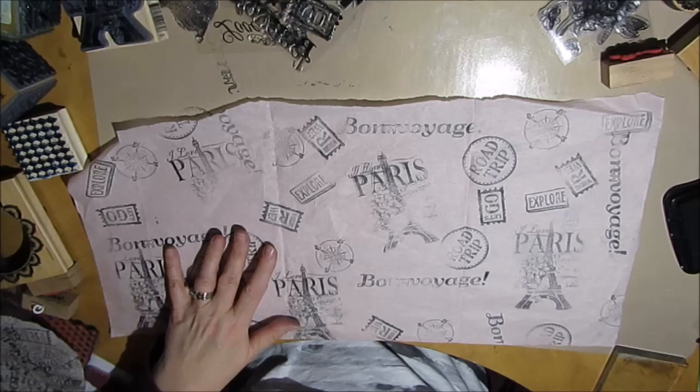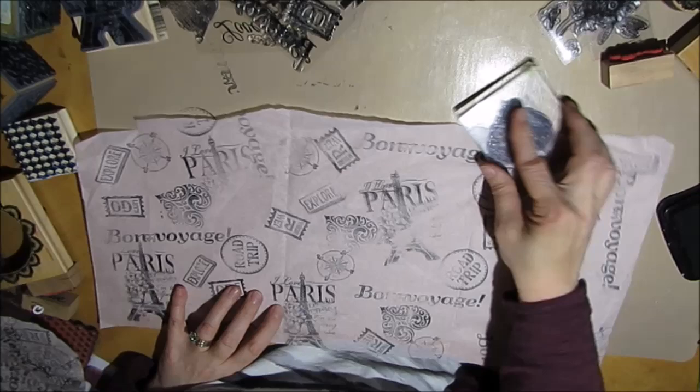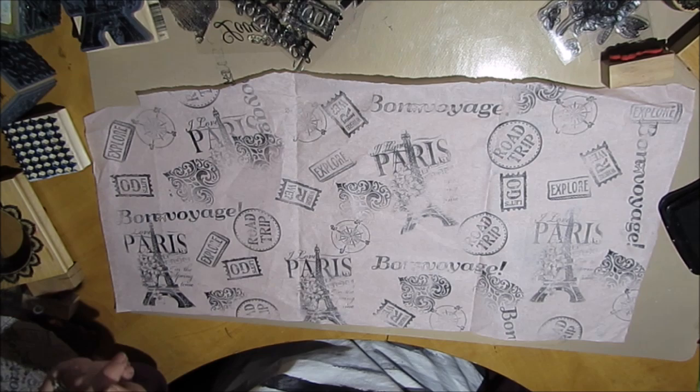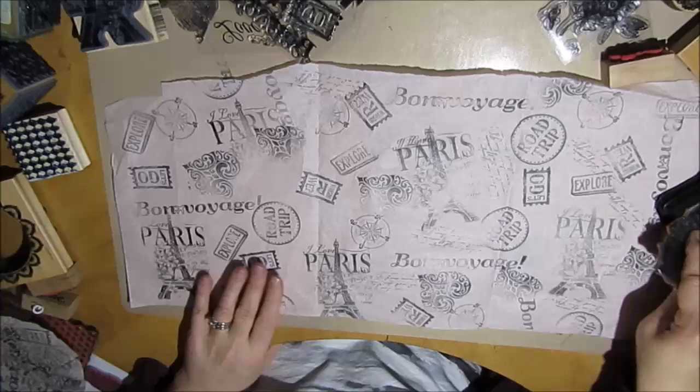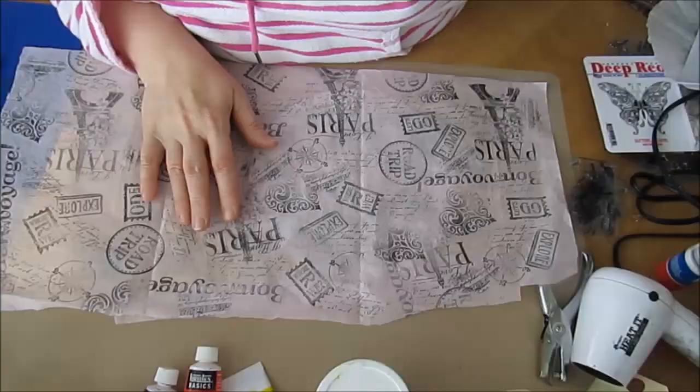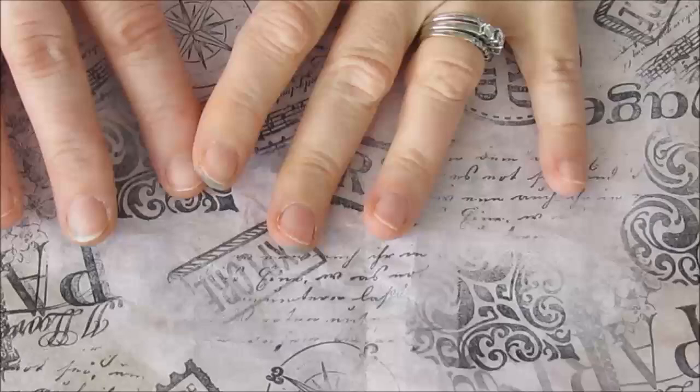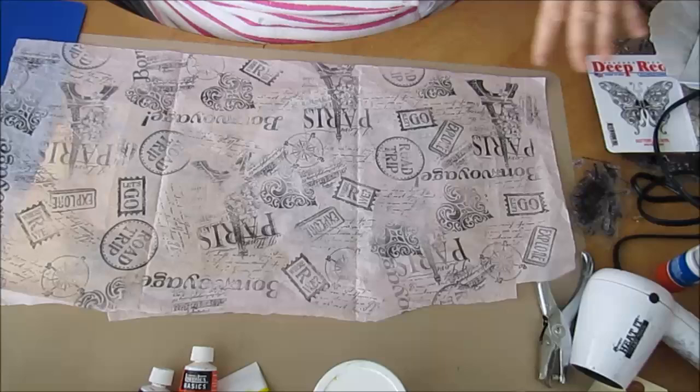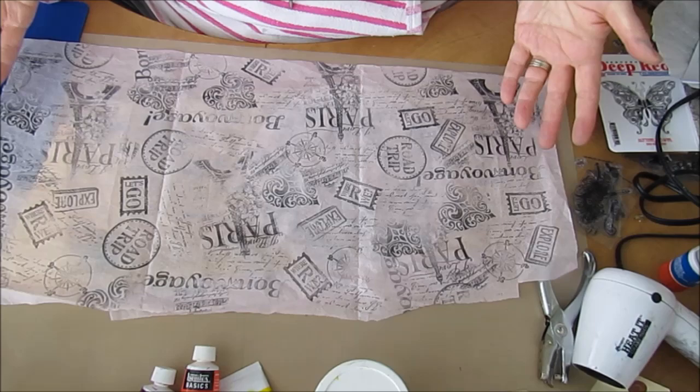So if you want to go online, you can Google Tim Holtz's papers or just printed tissue paper and see what they have, see what you like, and then go to your stamps and see how that works. As you can see, it builds up over time. And I absolutely love the end result here.